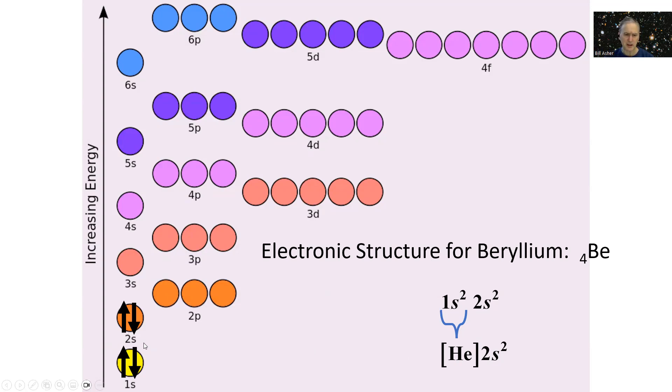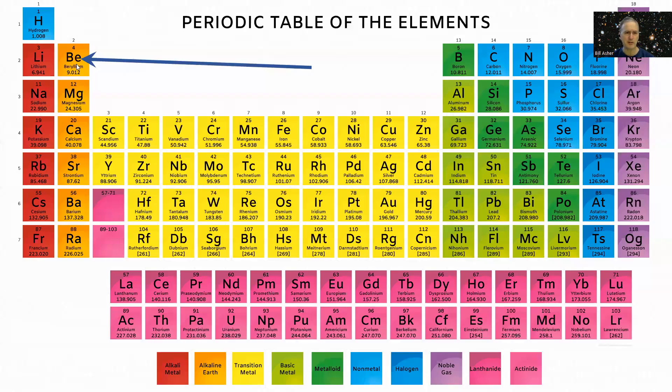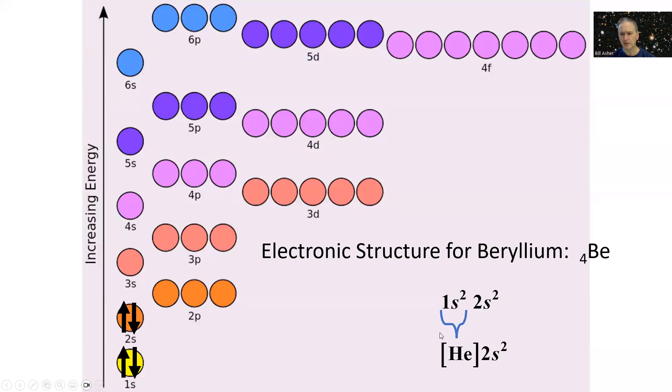If you fill the lower energy shell, it becomes isoelectronic with the noble gas in the next row above it. Beryllium is in period two, the noble gas in period one is helium. Helium has an electronic structure of two electrons in the 1s orbital. So we can write this as helium in square brackets, and then everything above that.